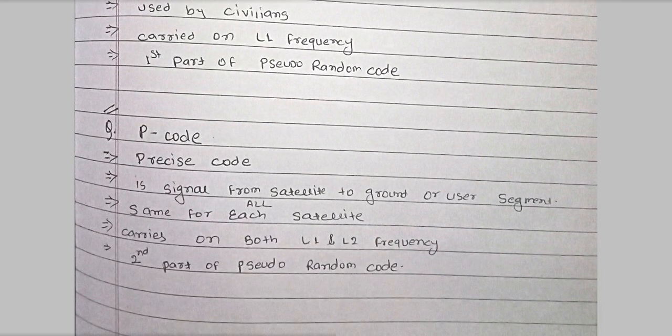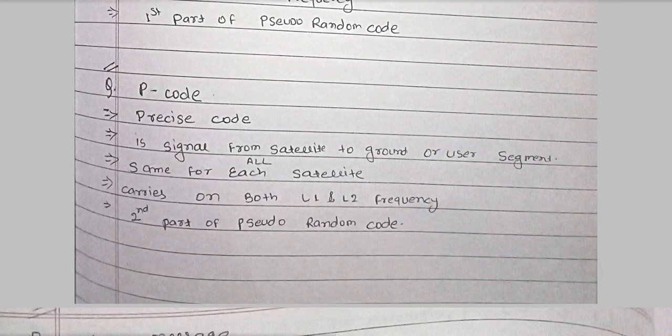Next is P code, that is Precise Code. P code is the signal from satellite to ground or user. This P code is unique for each satellite and can be carried on both L1 and L2 frequency. P code is also the second part of the pseudo random code, and it is only available for authorized users — not for civilians.